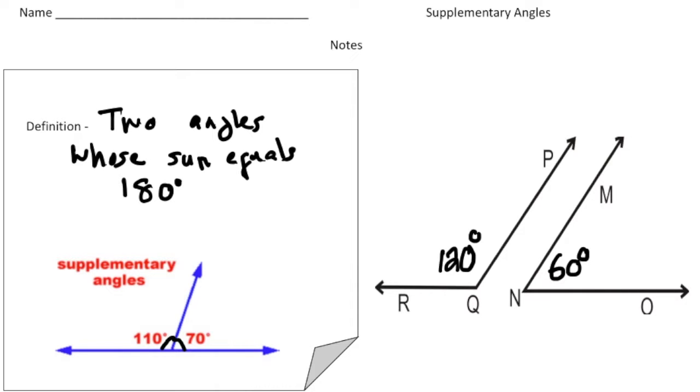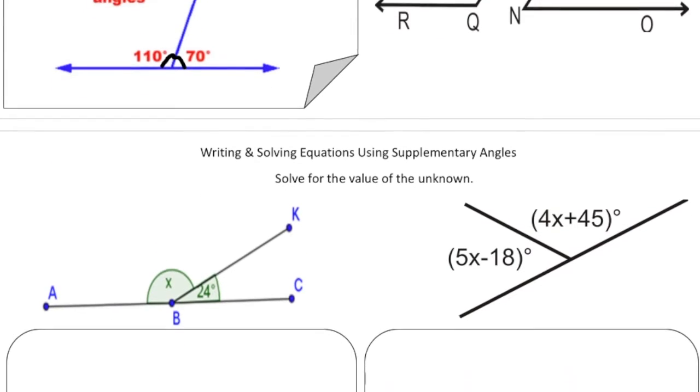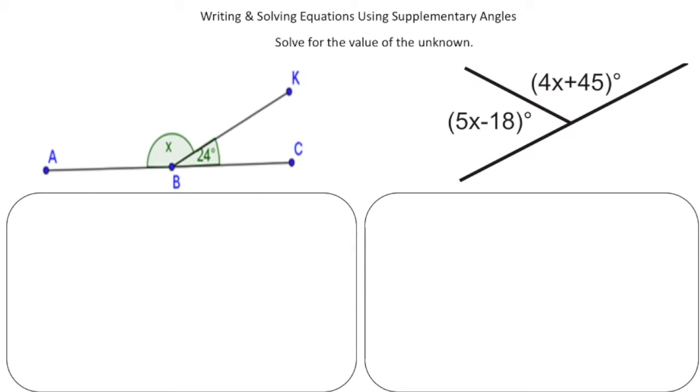Now that you know about supplementary angles, you can write and solve equations involving them. Here we have angle ABK and also KBC, and we know that they're supplementary. So that means this angle x plus 24 is going to add to 180.